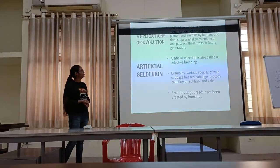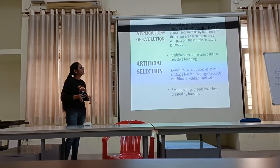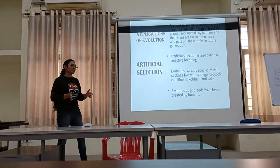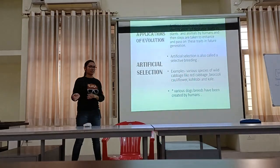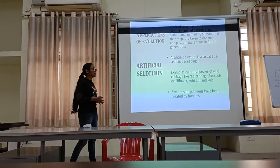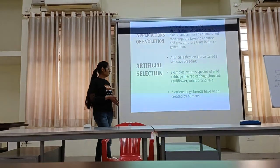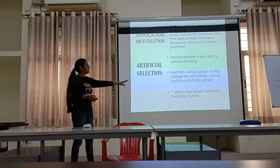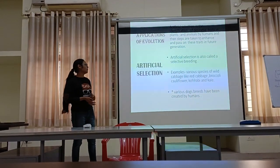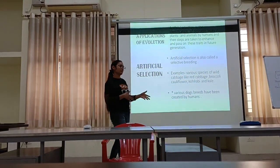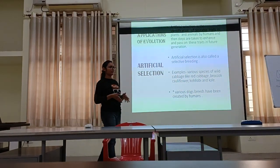Moving to the application of evolution. One of the major applications of evolution is artificial selection, which basically means the identification of desirable traits from organisms. It is used to create new species of organisms and is also called selective breeding. Farmers have been using this technique for thousands of years to create new species, such as creating red cabbage from wild cabbage.